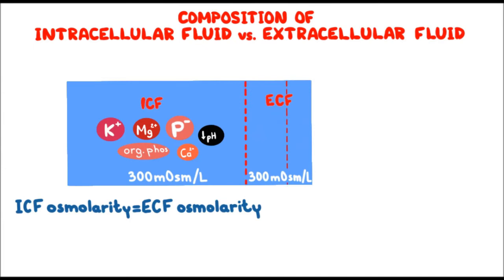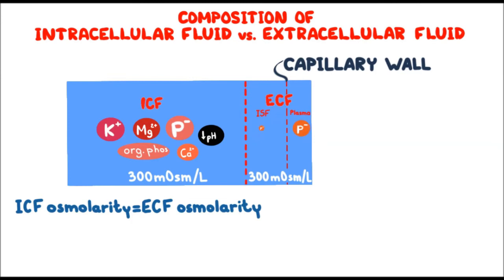Extracellular fluid consists of two sub-compartments: interstitial fluid and plasma. Because plasma and interstitial fluid are separated only by highly permeable capillary membranes, their ionic composition is similar. The most important difference between these two compartments is the higher concentration of proteins in plasma, because the capillary wall is not permeable to plasma proteins. This is why plasma proteins serve as an effective osmole for the vascular compartment; only tiny amounts of proteins leak into the interstitial spaces and are then returned by the lymphatic system.